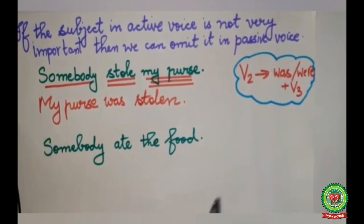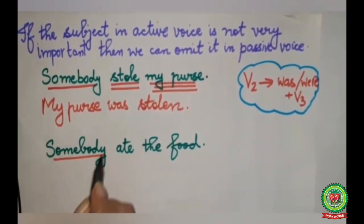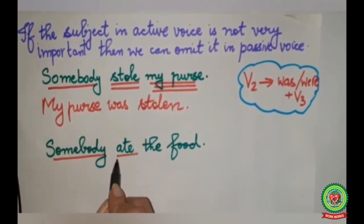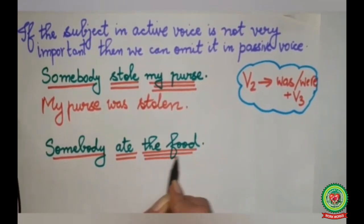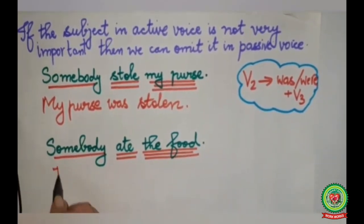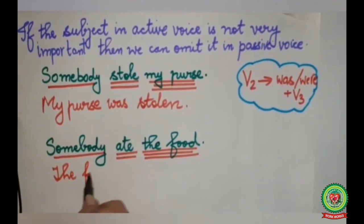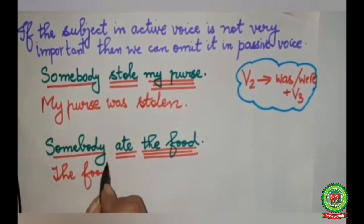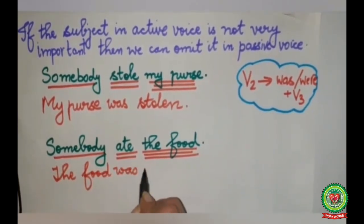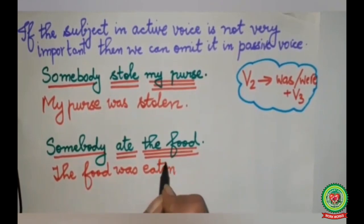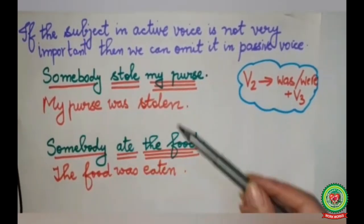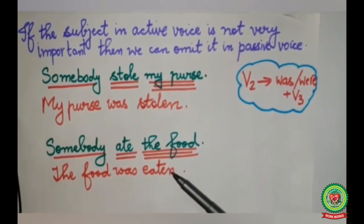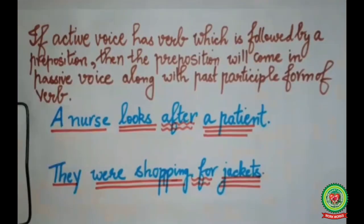Similarly in the second sentence: Somebody ate the food. Somebody is the subject, ate is the verb, the food is the object. The answer becomes: The food was eaten. We can omit the word somebody. These answers are also correct.